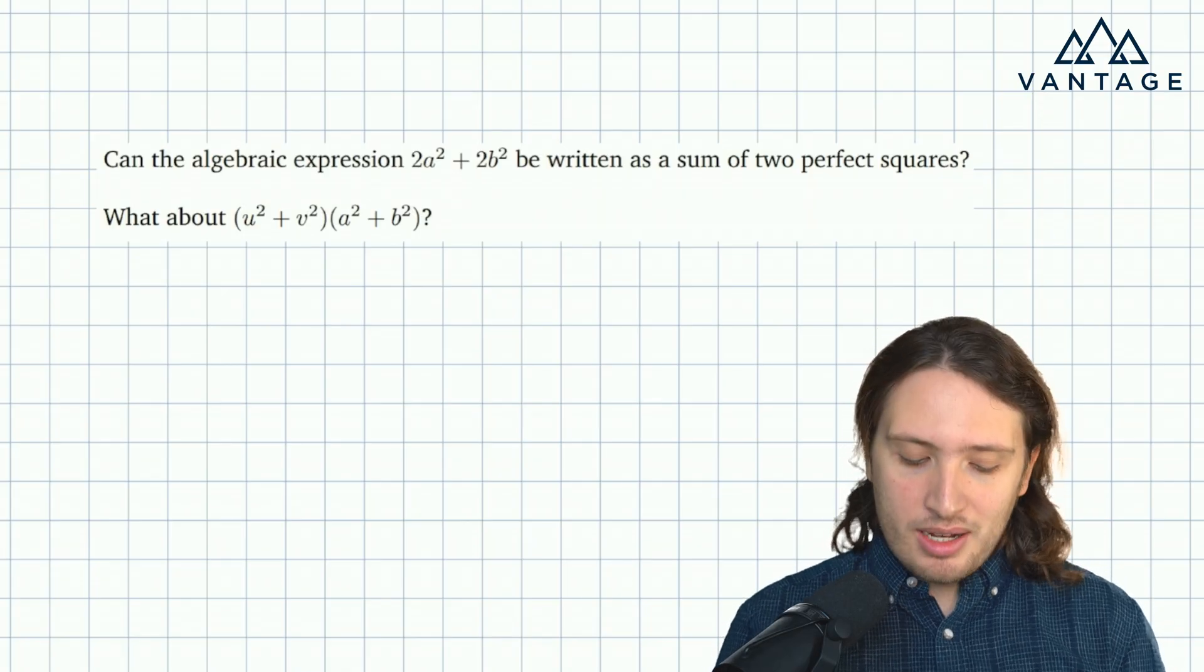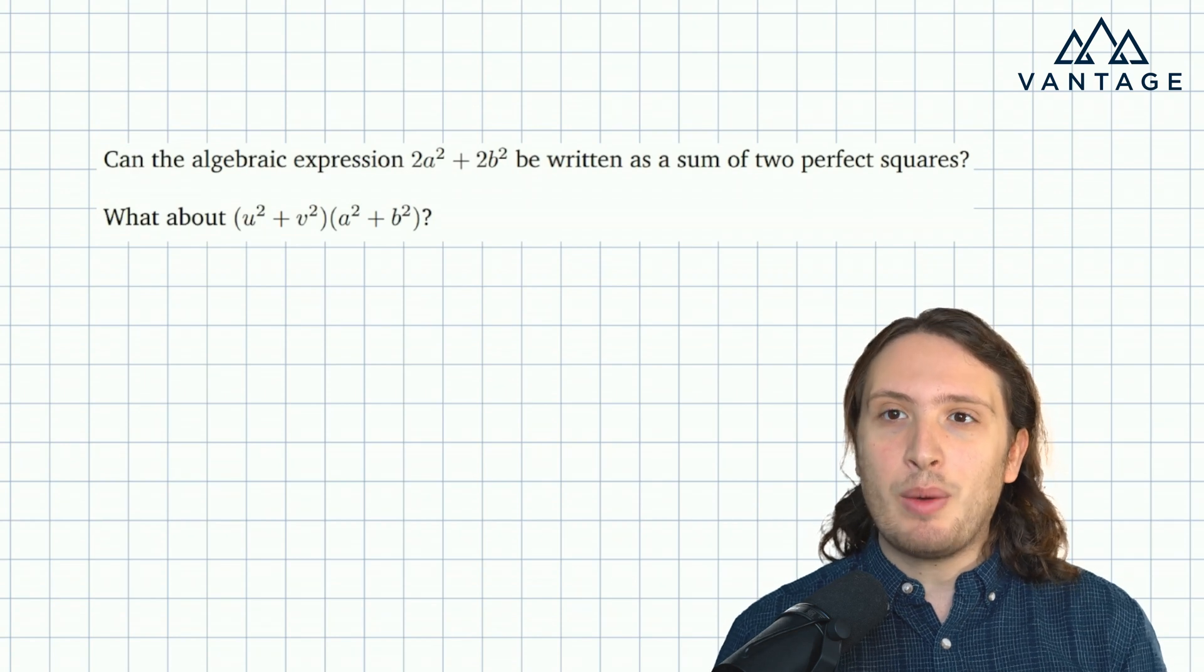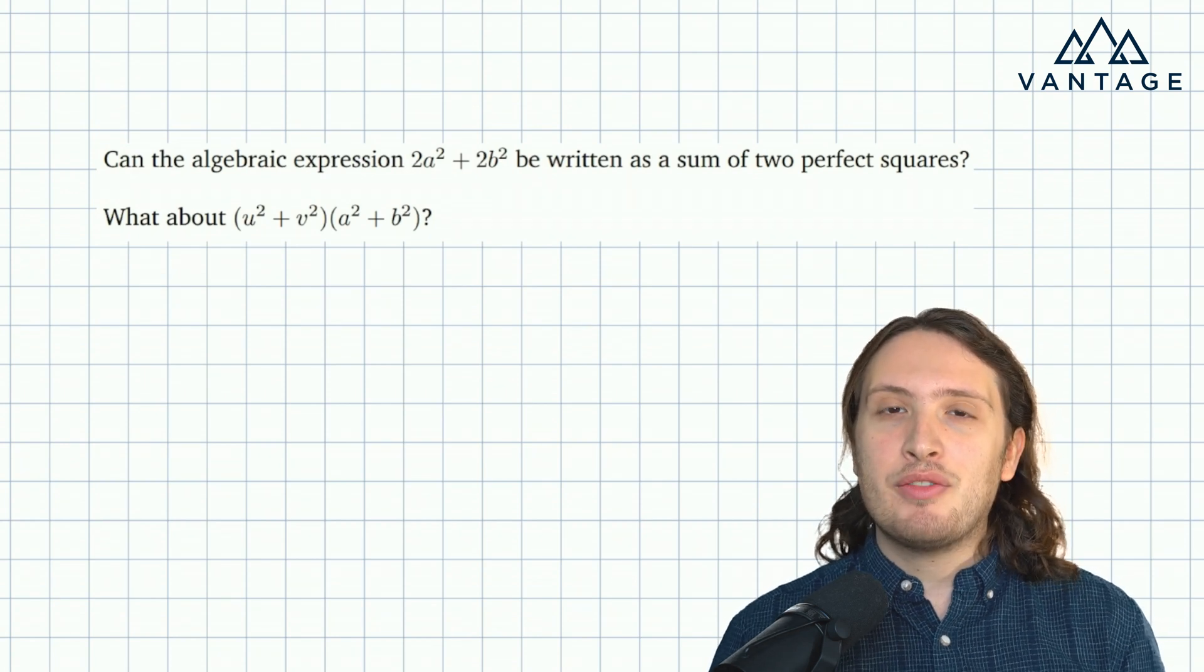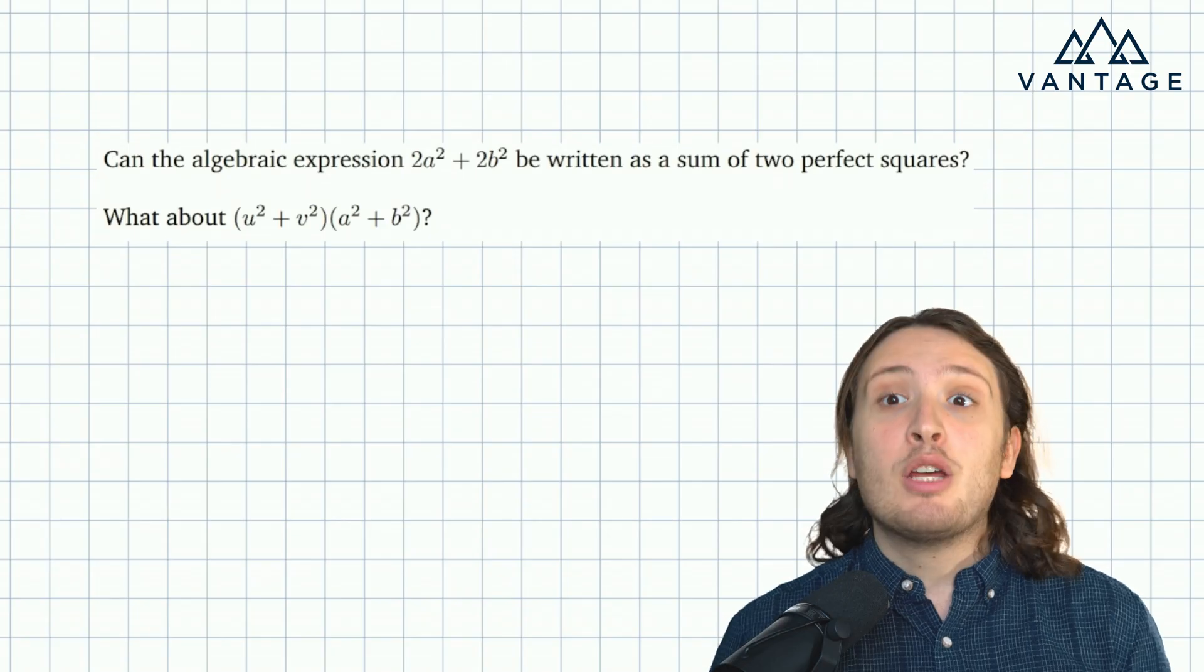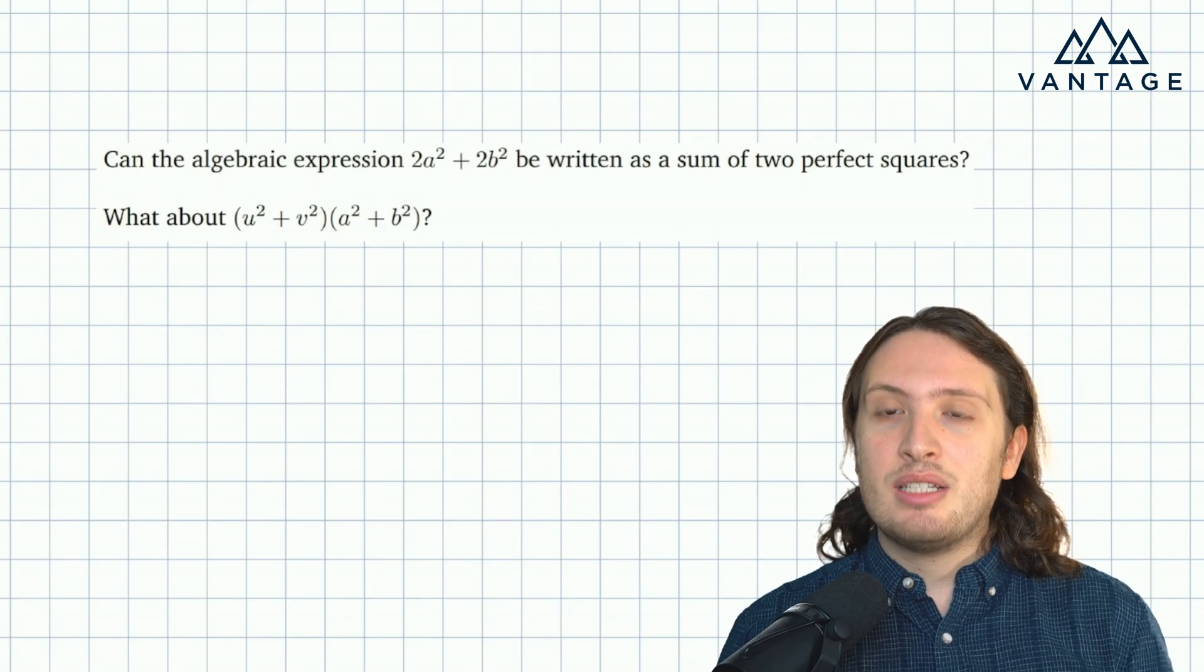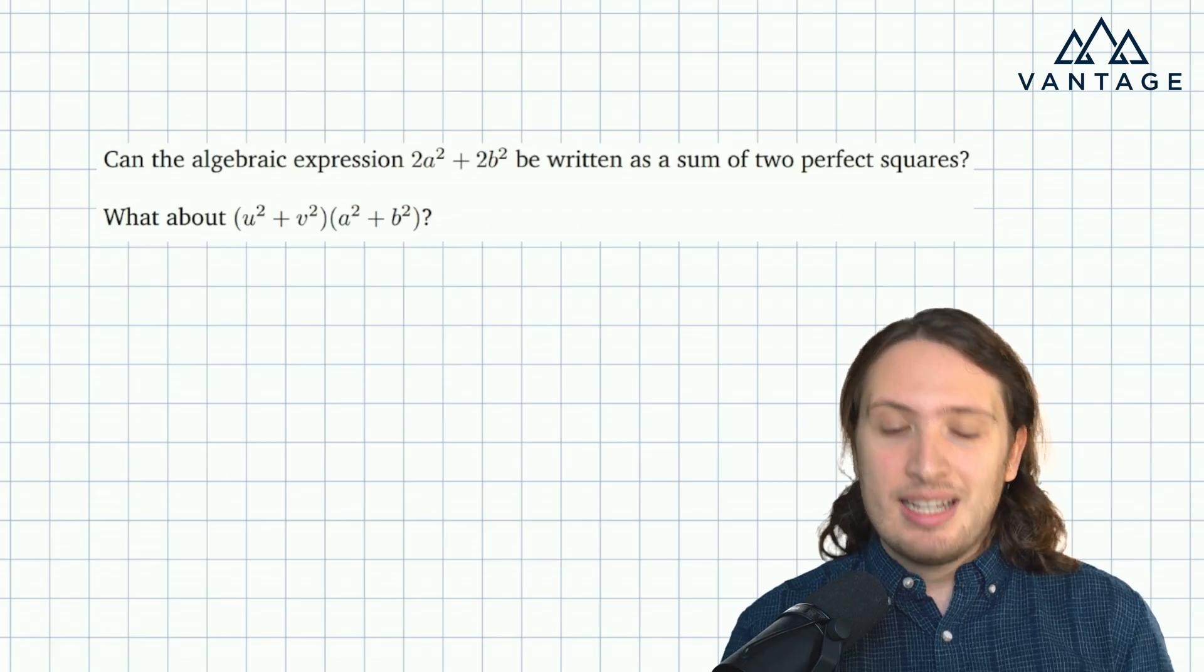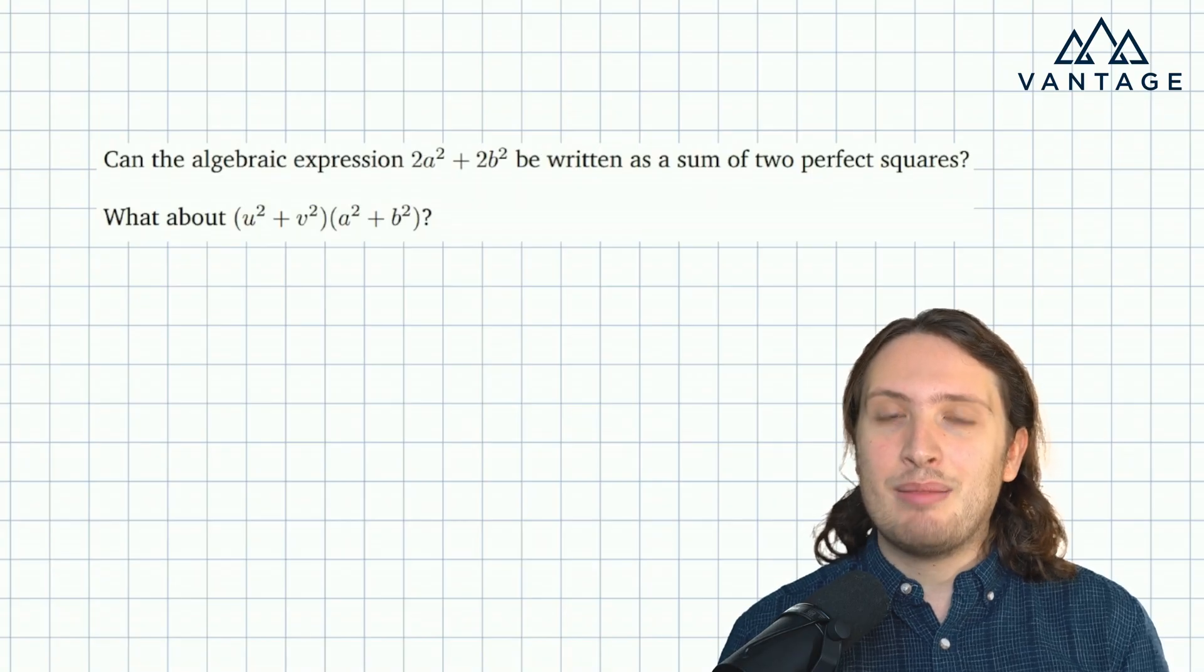In the first part of this question we're asked whether the algebraic expression 2a² + 2b² can be written as a sum of two perfect squares. So for the avoidance of doubt we mean written algebraically in this way. I'm not saying for particular choices of a and b can we identify this as two squares added together, but